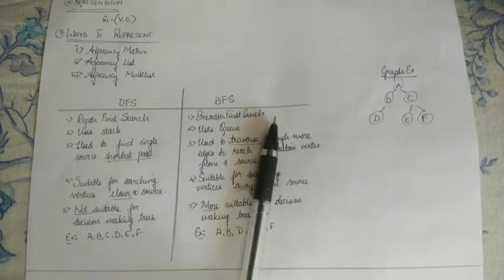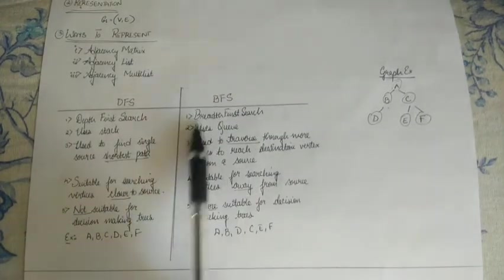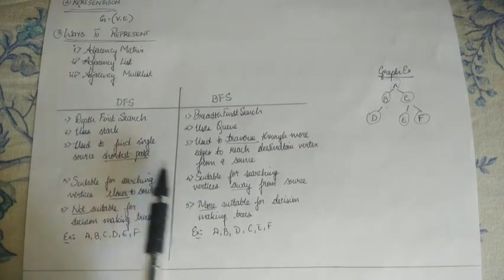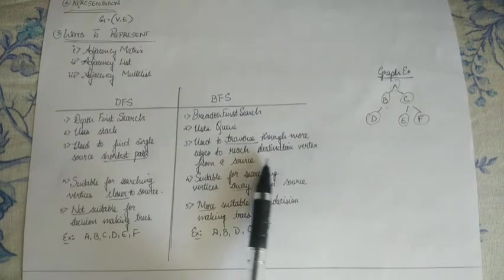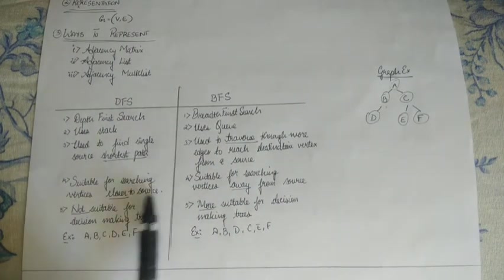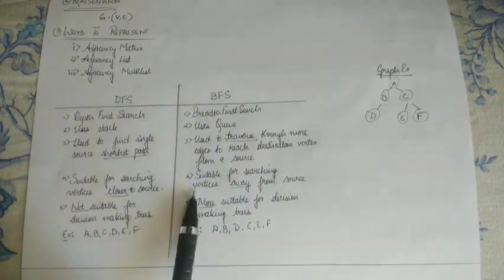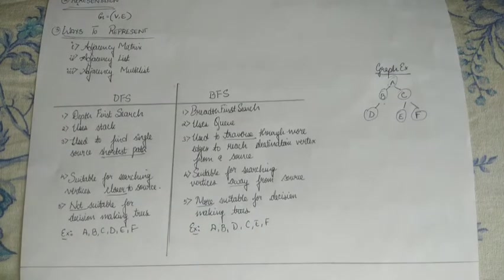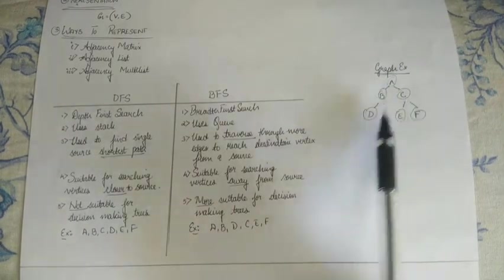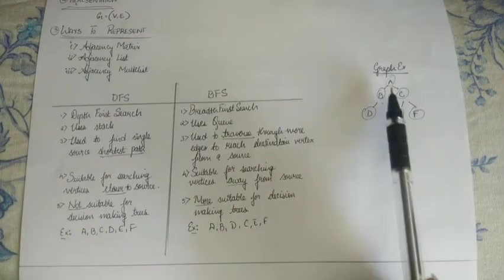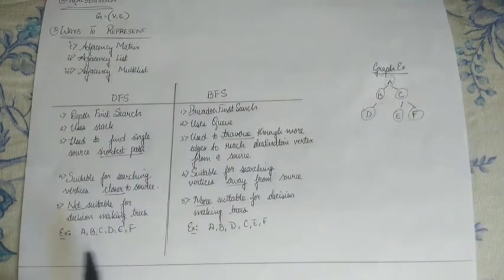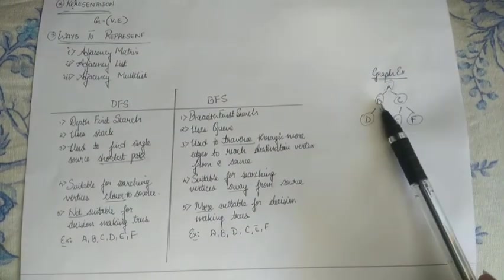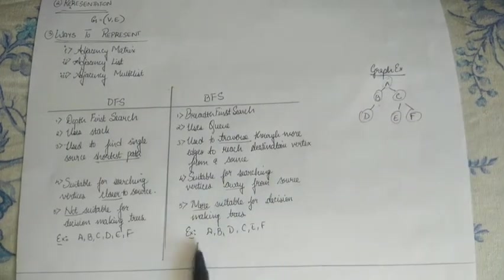And next important topic on the graph is DFS and BFS difference. So, DFS is depth-first search and BFS is breadth-first search. DFS uses stack, BFS uses queue. DFS is used to find single source shortest path, and BFS is used to traverse through more edges to reach destination vertex from a source. DFS is suitable for searching vertices closer to the source, and BFS is suitable for searching vertices away from the source. Next, DFS is not suitable for decision-making trees, and BFS is more suitable for decision-making trees. Now, consider this graph, A, B, C, D, E, F. In case of DFS, you would be traversing as A, B, C, D, E, F. In case of BFS, the same graph, you would be traversing it in a different way as A, B, D, then C, E, and F.